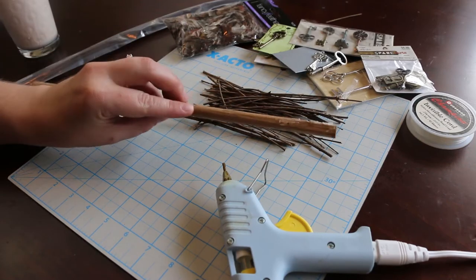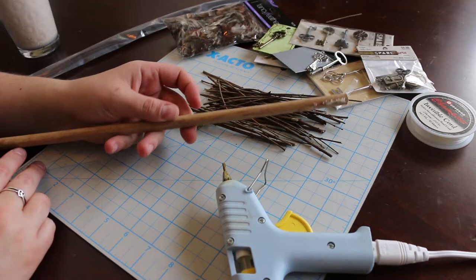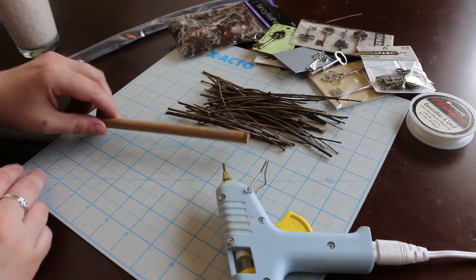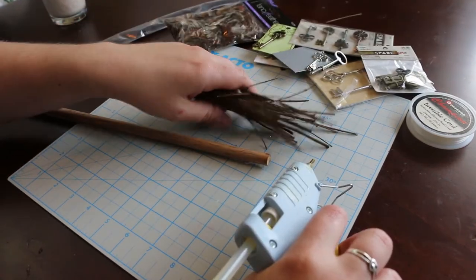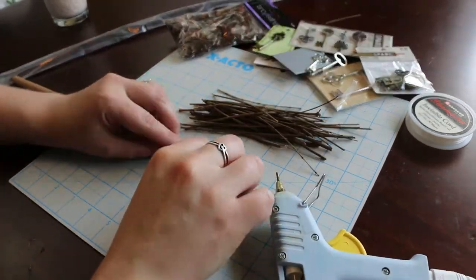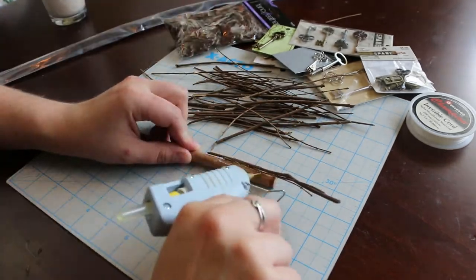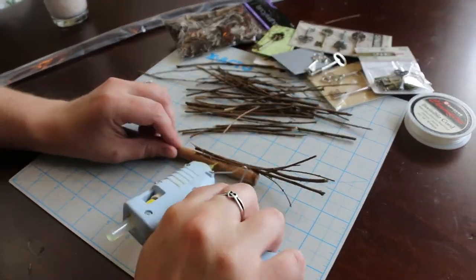Okay, to make the broom you're going to need a 12-inch dowel rod, or you can make it as big as you want honestly. Then you're going to need several twigs. Just snap them all to about the size you want, and then just start hot gluing them onto the dowel rod in a fashion that makes them look like a broom. Pretty simple.